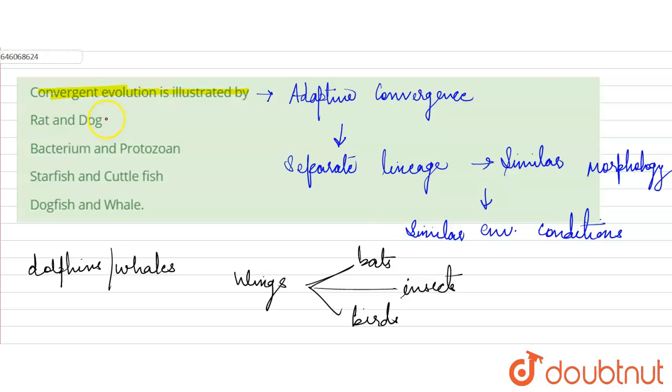The first is rat and dog. They do not show similar morphology nor do they have similar environmental condition influence. Again, bacterium and protozoan are microorganisms and they have irregular shape. They do not have a stable body shape. They cannot show similar morphology at all.